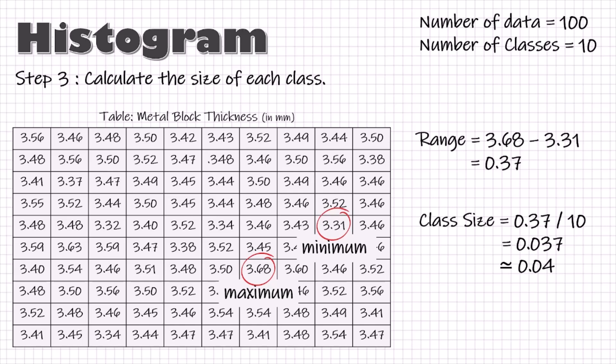Now, if you want to make calculations simpler, you can also take class size as 0.05. In that case, the number of classes required to cover the range of 0.37 will be 8 or 9 only. So, whether you want your class size to be 0.04 or 0.05, it is totally up to you. There is no hard and fast rule here.